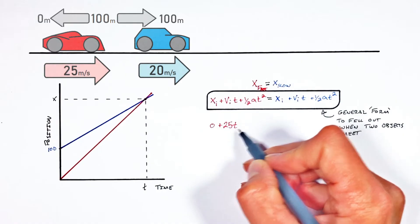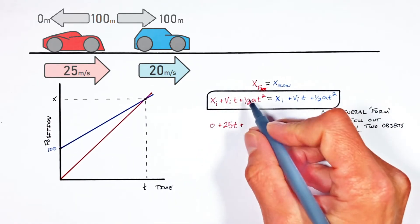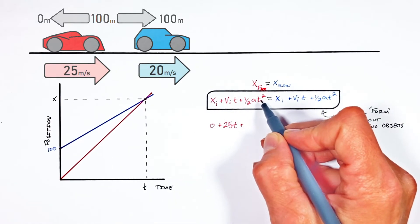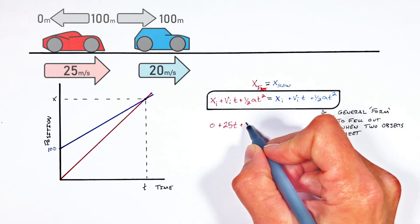Multiplied by t. We don't know what t is. That's the time we're trying to solve for. Plus one half times the acceleration multiplied by t squared.